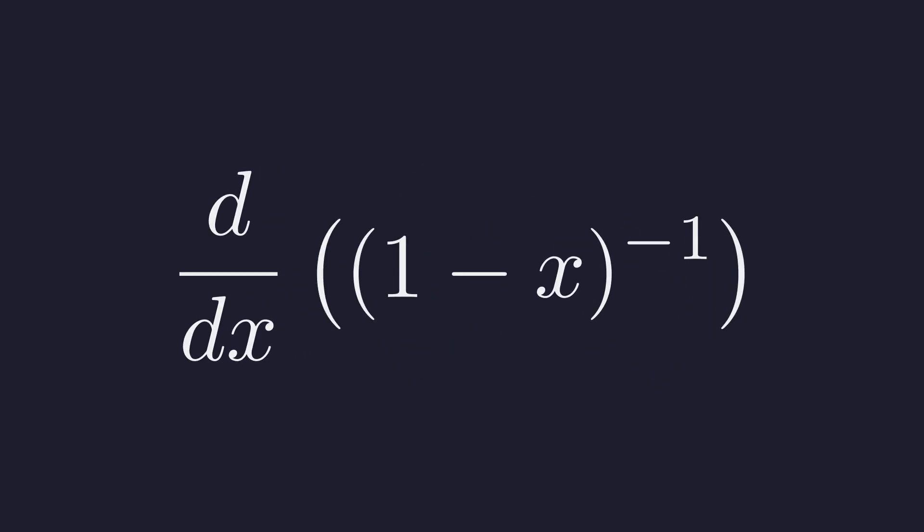This is equivalent to the derivative of the quantity 1 minus x to the power of negative 1. Now, we apply the chain rule. We'll differentiate the outer function, and multiply by the derivative of the inner function, 1 minus x.